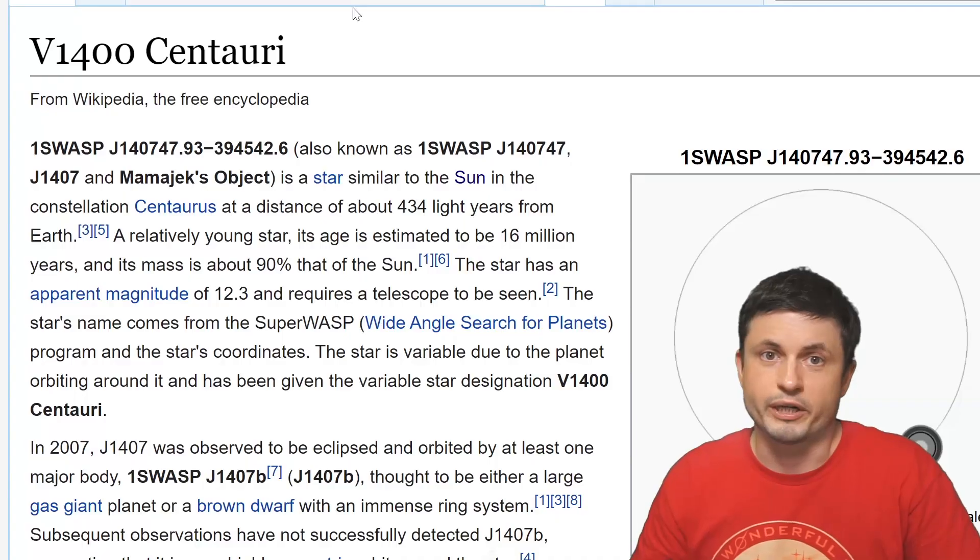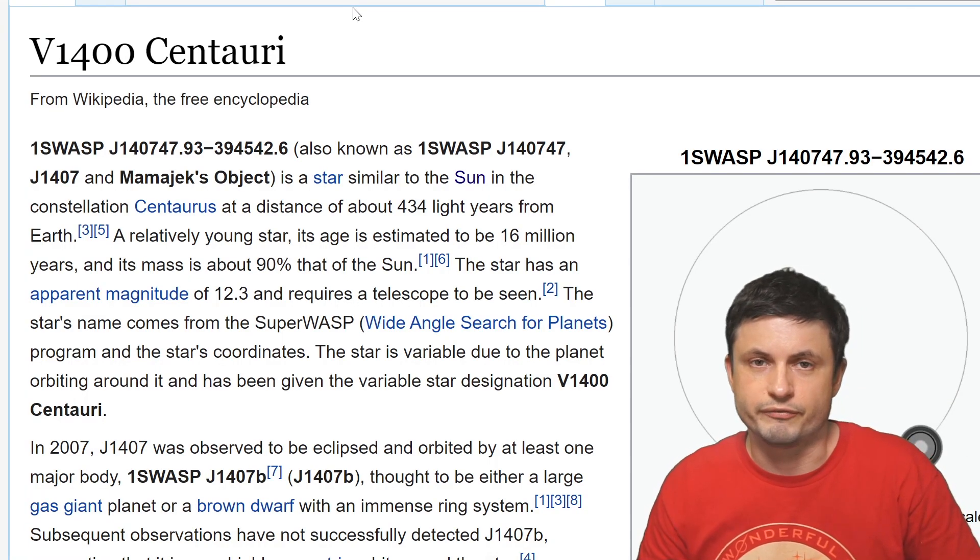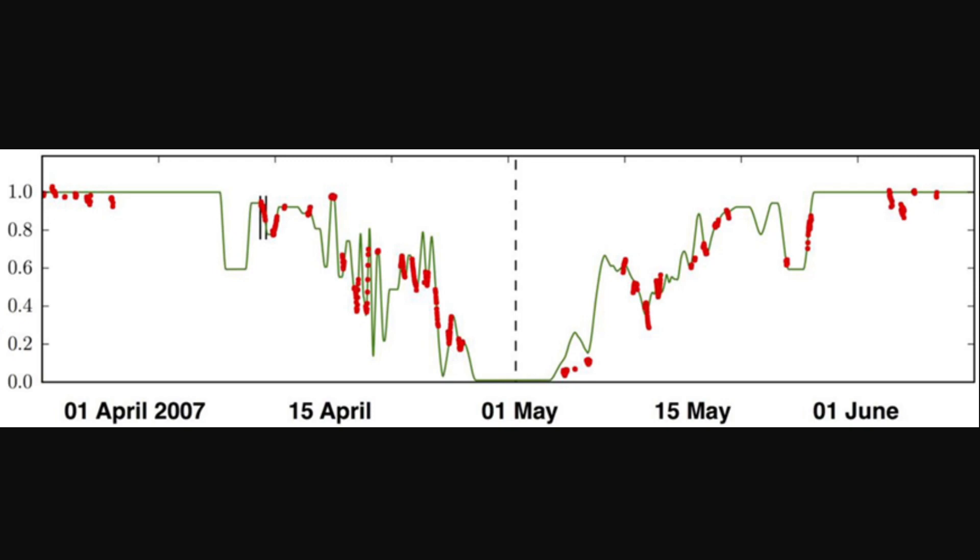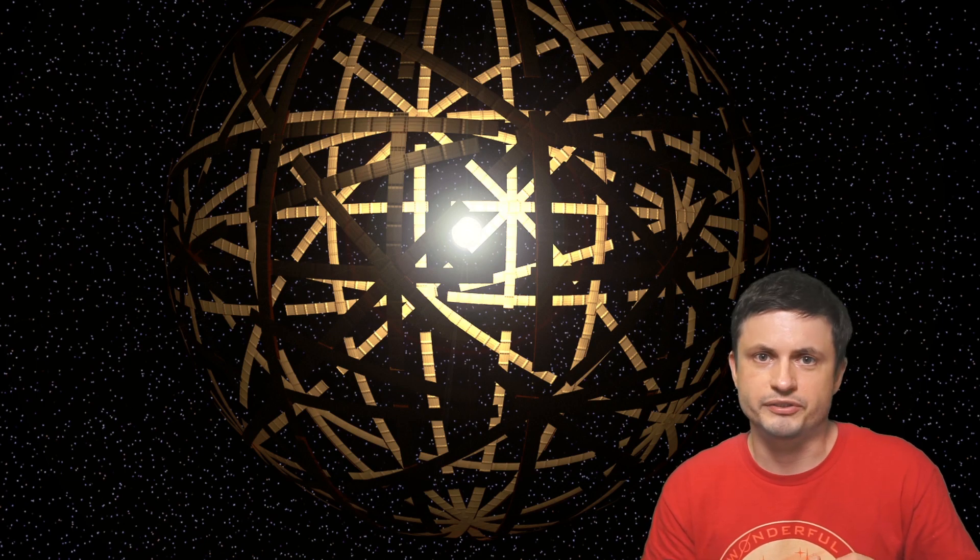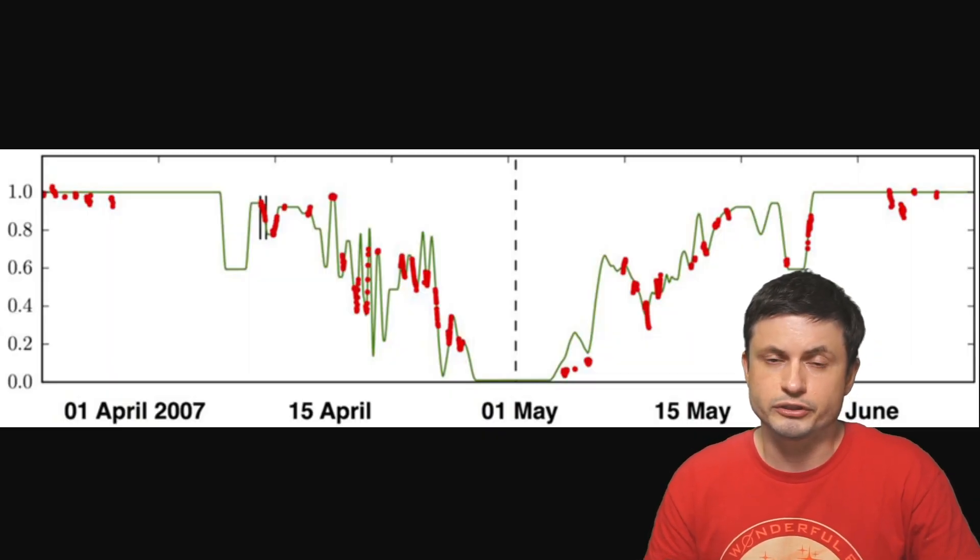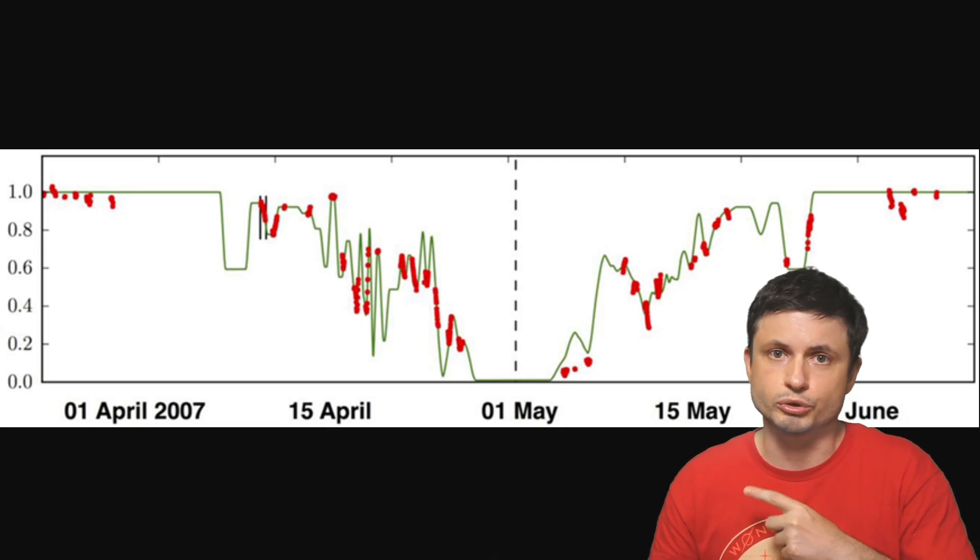So back in 2007 the scientists looking at this unusual star, or actually somewhat usual star known as V1400 Centauri, or more commonly known as G1407, discovered these unusual dips in brightness that really were difficult to explain. This actually lasted for approximately 56 days. But unlike other stars like the famous Tabis star whose explanations involved megastructures, it didn't really take the scientists very long to figure out exactly what they were looking at here.